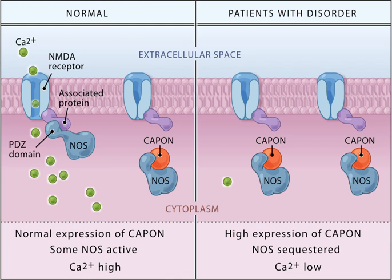Neurotransmitters are endogenous chemicals that enable neurotransmission. It is a type of chemical messenger which transmits signals across a chemical synapse, such as a neuromuscular junction, from one neuron to another.